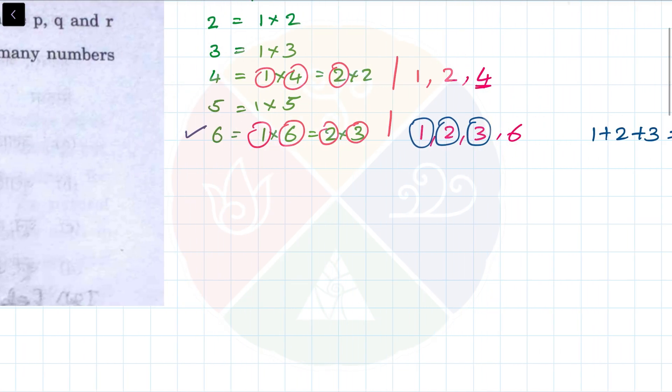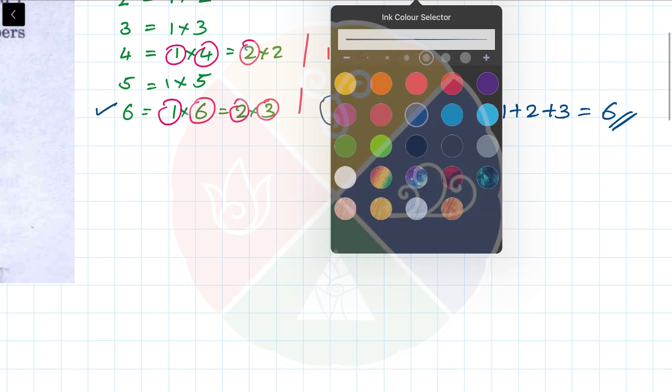If we go forward, 7 is a prime number so it will not work. Let's check 8: 1 times 8 or 2 times 4. The factors are 1, 2, 4, 8. I cannot take 8 because that's a big number. 4 plus 2 plus 2 is only 7, so I cannot use 8.